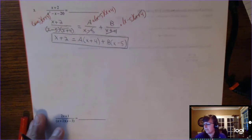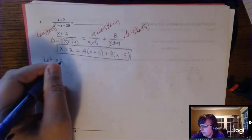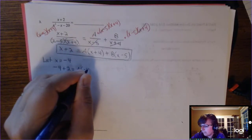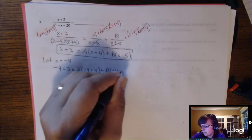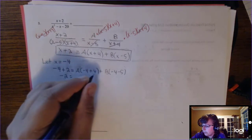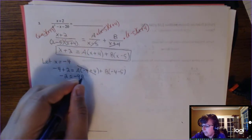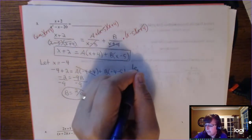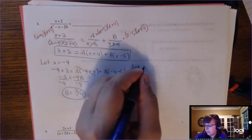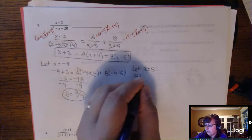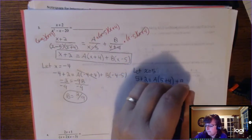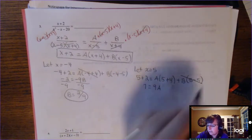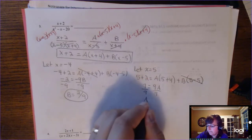Let x equal the zero from x plus 4, which is negative 4, and plug it in everywhere. That gives negative 2 equals 0 times A, which is gone, plus negative 9B. Divide by negative 9, and B is 2 ninths. Now let x equal 5 to find A. Substituting: 7 equals 9A plus 0. Divide by 9, and A is 7 ninths.